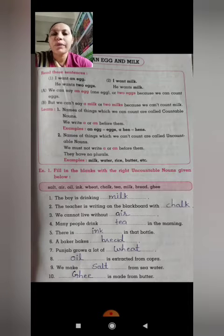Learn number 1. Names of things which we can count are called countable nouns. Aise things jahaan par joh count kar sakte usko woh kehte countable noun. We write a or an before them. Jahan bhi countable noun ho, uske pahle a ya an likhna hai. Like examples: an egg, one egg to two eggs. A hen to hens.